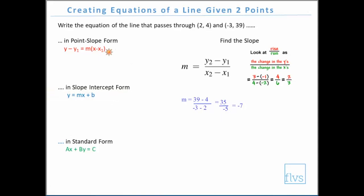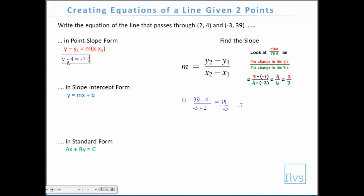Point-slope form literally requires a point on the line and the slope. We've got two points and the slope, so we can simply plug in to get point-slope form. Remember, when we plug in the point it's the opposite of what you see. You can use either point. I like to use the easy one, so I'll plug in: y minus 4 equals -7 times (x minus 2). That's point-slope form.